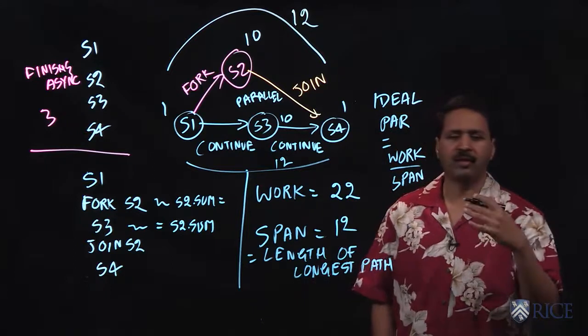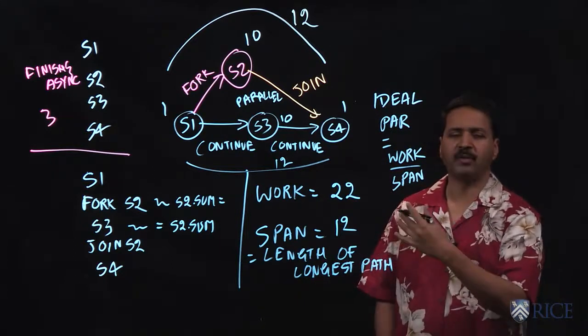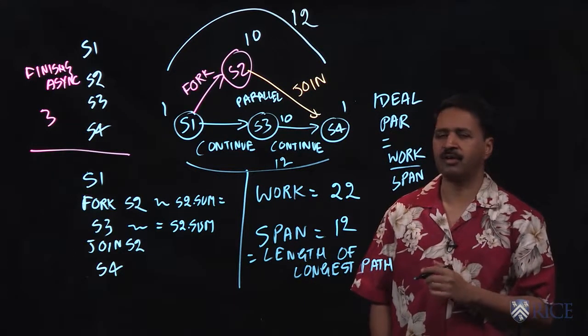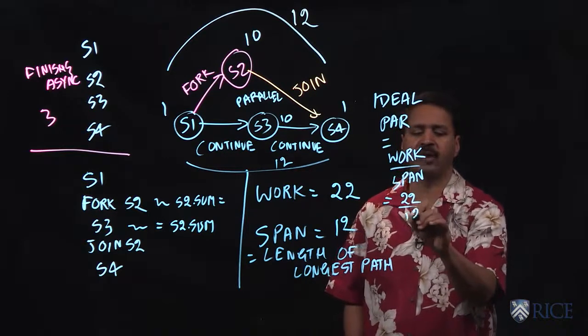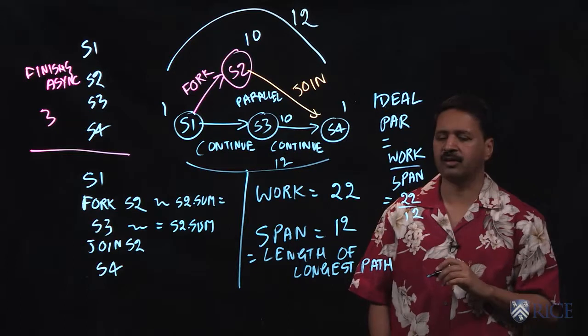It gives you a very concrete metric of how much parallelism is there in a computation graph. In this case, it's 22 by 12, which is quite modest. That's just under a factor of two.